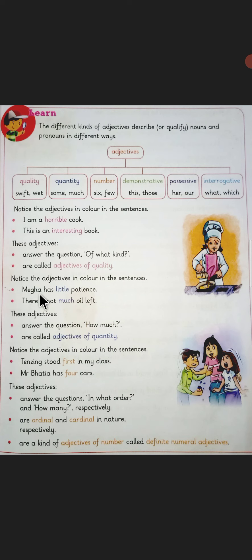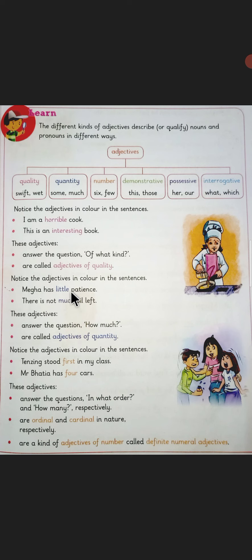The first sentence is: 'Mega has little patience.' What kind of patience? How much patience? It is not 'what kind of patience' because we know there is no other kind of patience, so it cannot be an adjective of quality. When we say 'Mega has little patience,' we are assessing how much patience Mega has. So this word 'little' is an adjective of quantity.